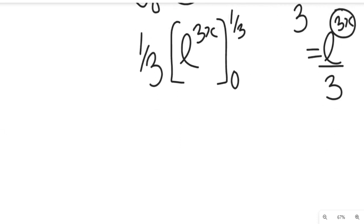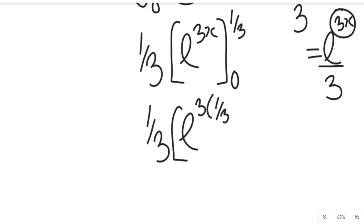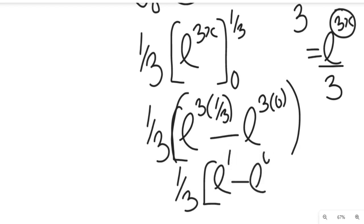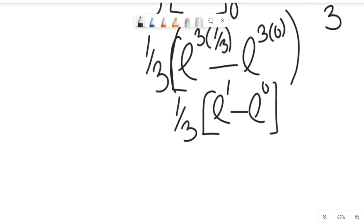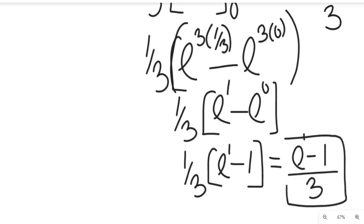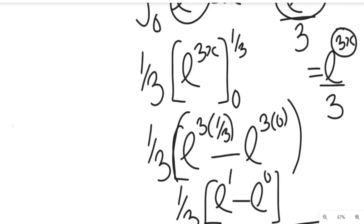Substituting the limits: the upper limit gives e to the power of 3 times 1/3, and the lower limit gives e to the power of 3 times 0. So we have 1 over 3 times, in brackets, e to the power of 1 minus e to the power of 0. Since e to the power of 0 equals 1, this simplifies to 1 over 3 times (e minus 1), which equals (e minus 1) divided by 3.